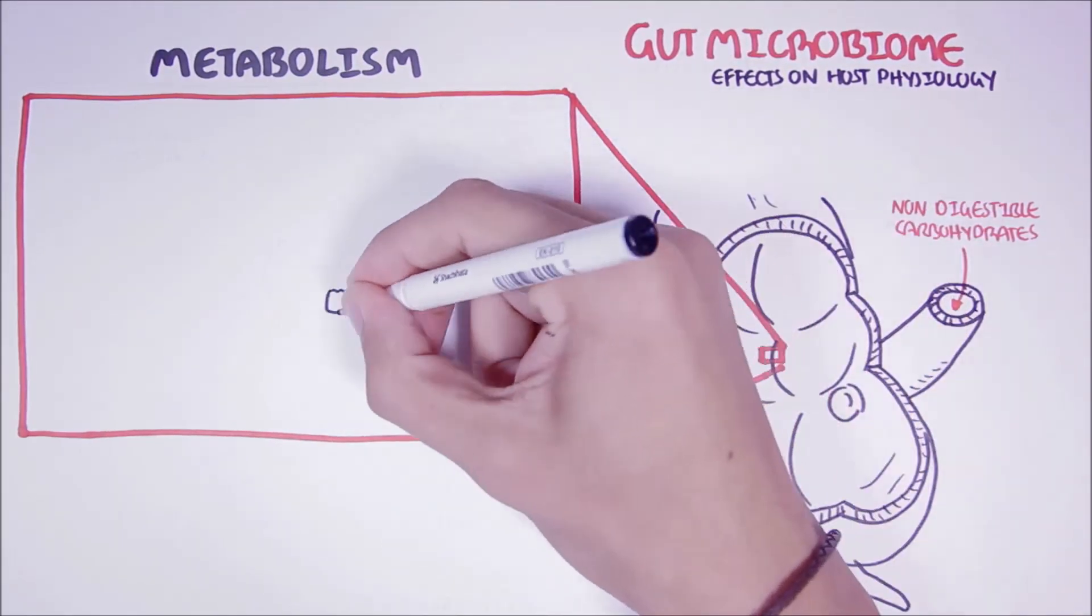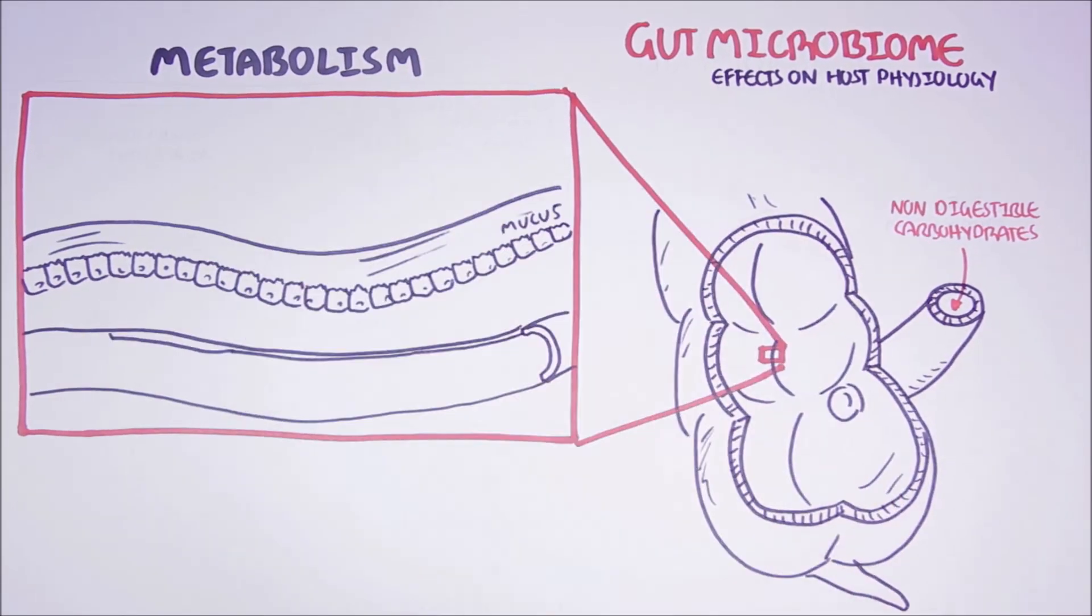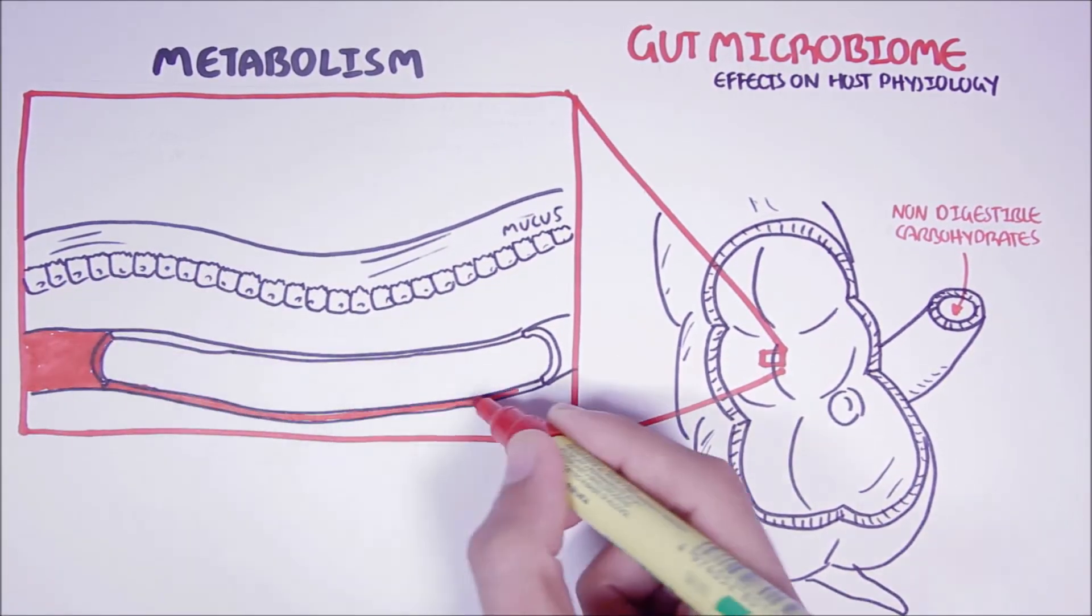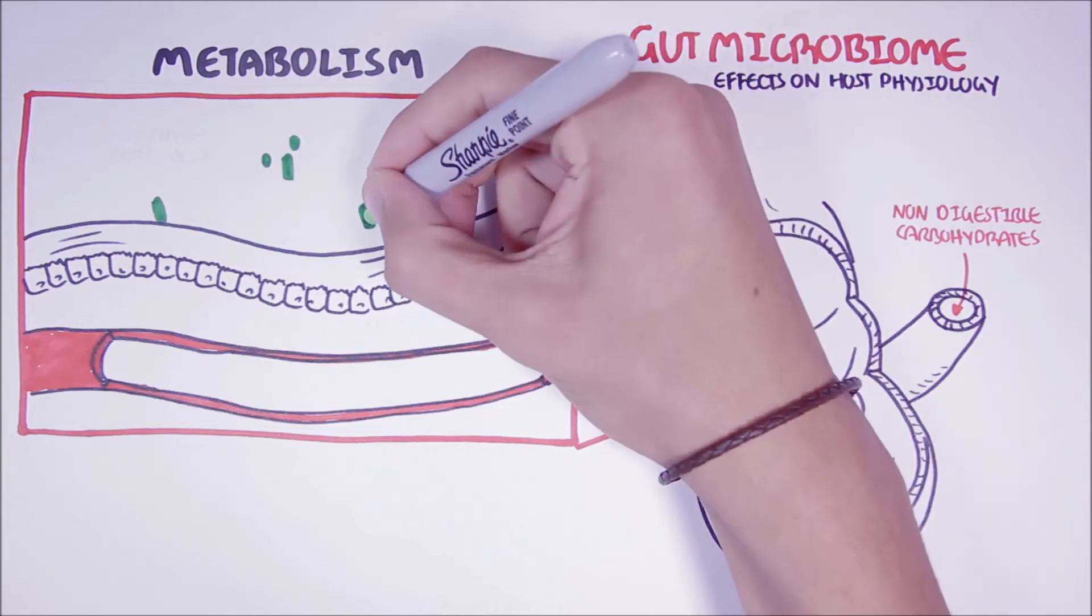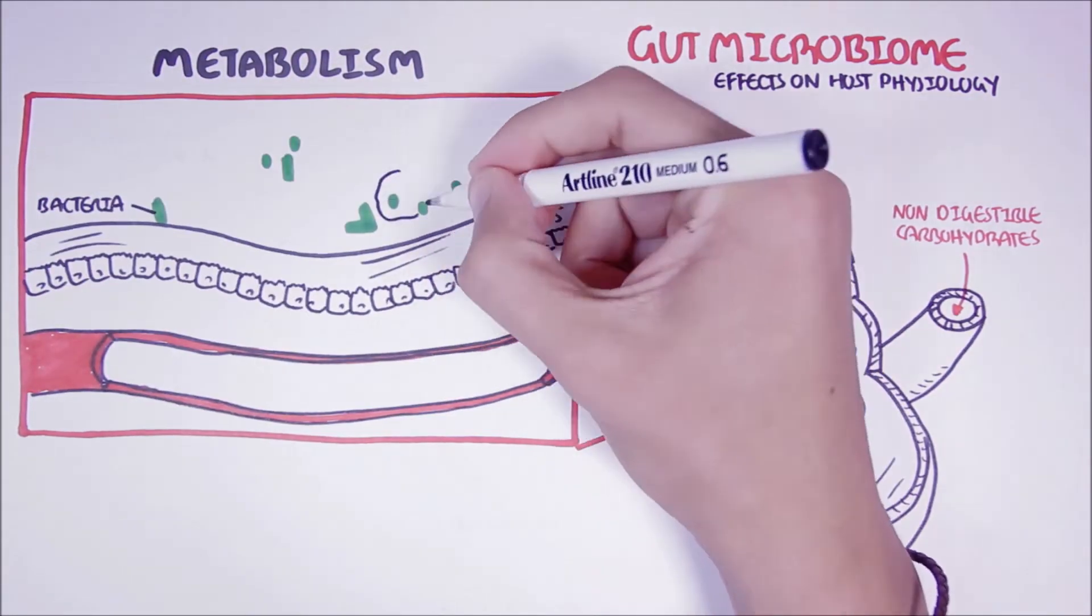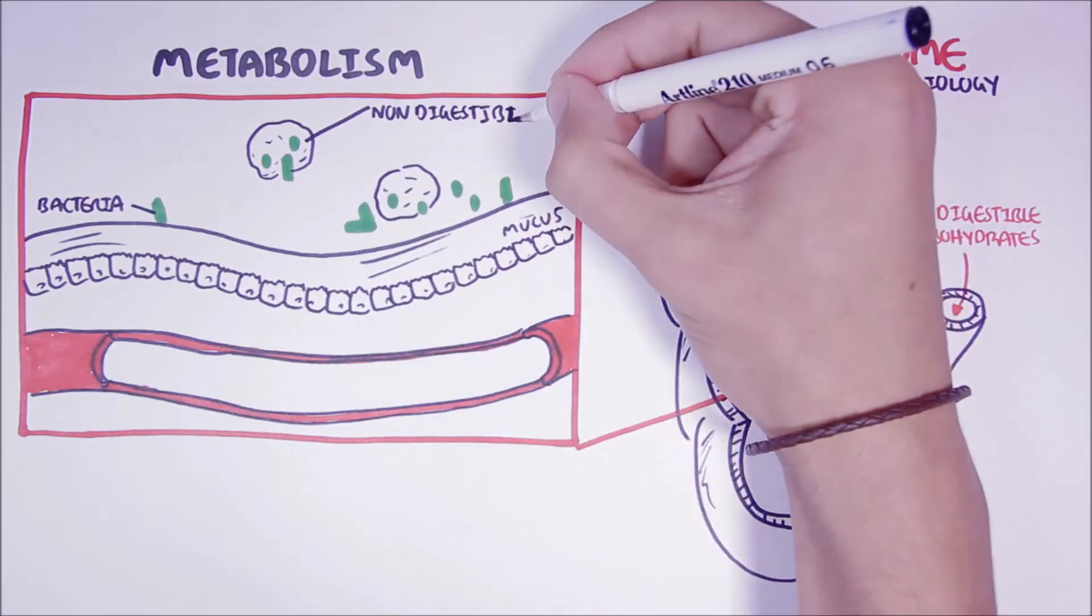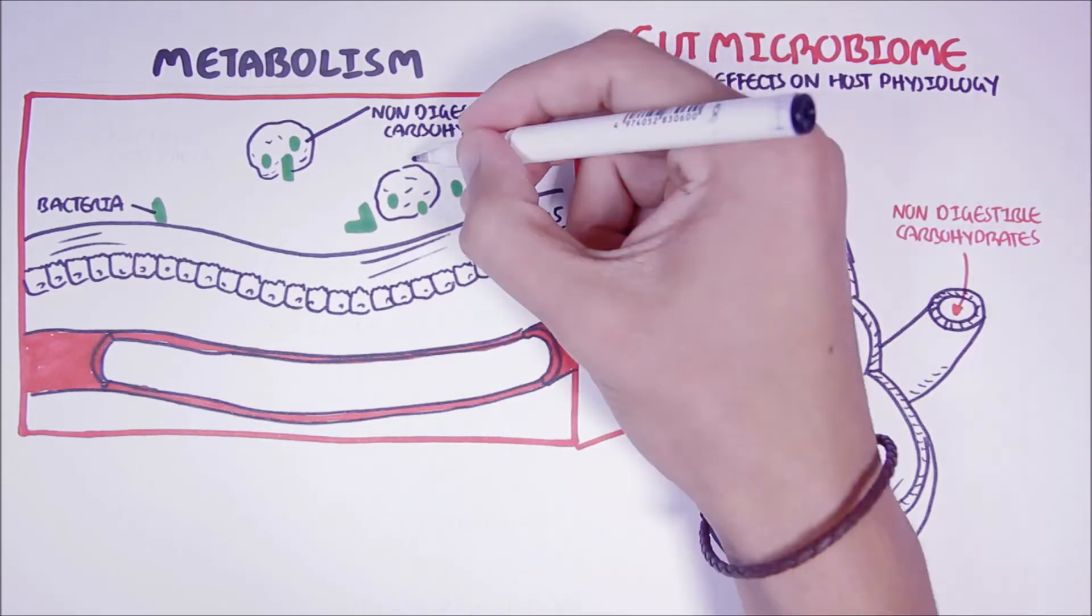So, let us have a closer look at this process. Here we have the colonocytes with mucus on top. And here is the blood supply. Within the lumen of the colon, we find the bacteria communities waiting for food to come. The non-digestible carbohydrate particles will reach the colon and will be then fermented by the bacteria.